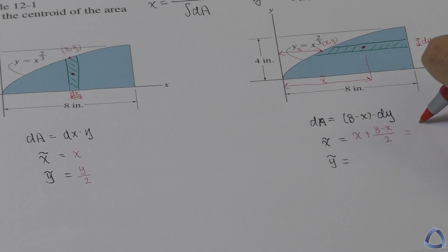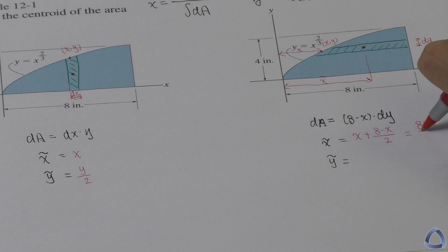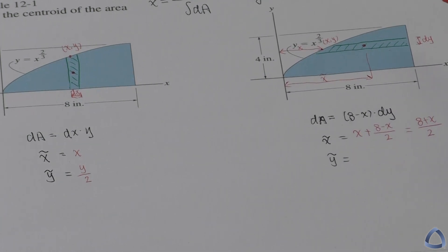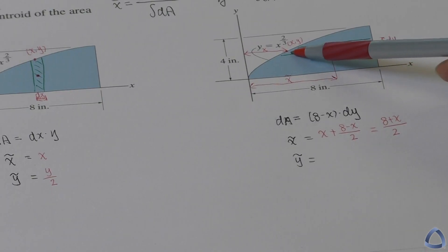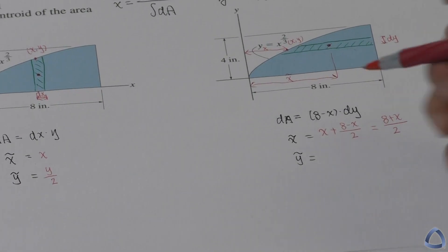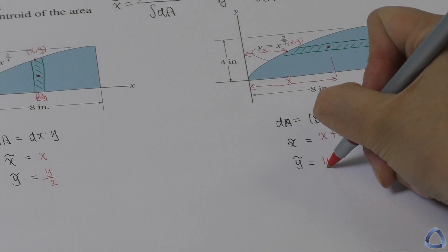If we combine them together, it will be 8 plus x divided by 2. Then what is the y tilde here? You can see it's the same height with the point on the curve. So that's why it's going to be y.